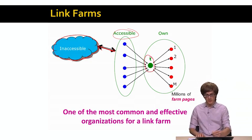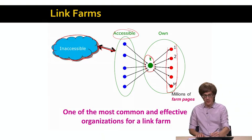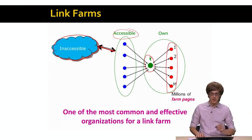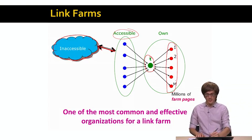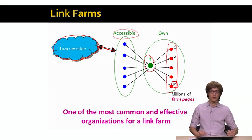And then, what the web spammer can also do, they can take these web pages that they own and they can make all these web pages both point to the target page T. And the target page T can point back to these pages. And the idea is that the number of these pages is huge. We will call the number of these pages to be M and think of them as millions of farm web pages because they are very cheap to create.